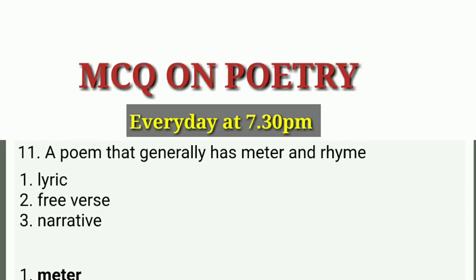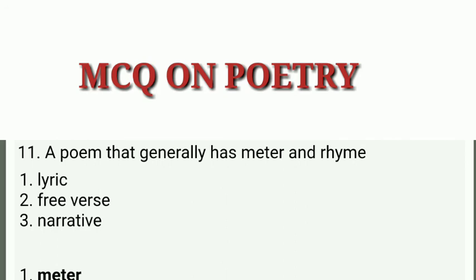Question 11: A poem that generally has meter and rhyme. Ek poem jisme meter aur rhyme dono hote hain, use kya kaha jata hai? Options are lyric, free verse, and narrative. Your answer is lyric.